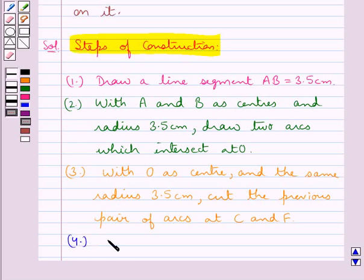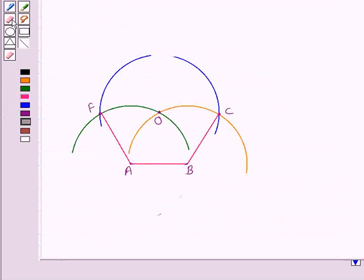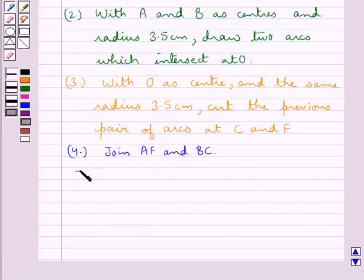Now next we join AF and BC. So we have joined AF and BC. In the next step we have with C and F as centers.